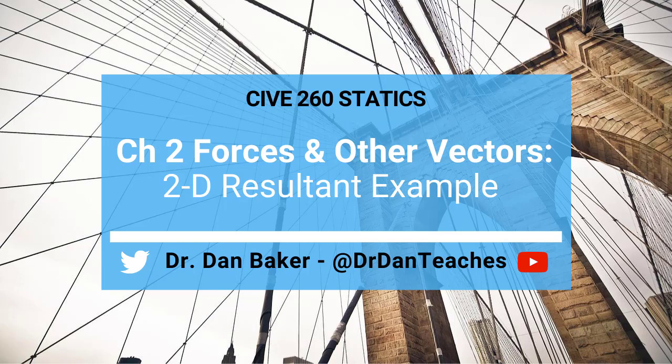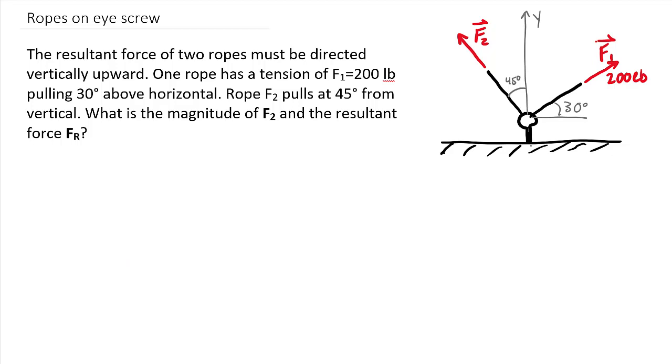Hello students of statics. Here is an example based upon two-dimensional vector resultants. What we have here is that the resultant force of the tension in these two ropes has to be directed vertically upward. Let's go ahead and draw that resultant force. Fr has to be vertically upward, so we know what direction it's going in.